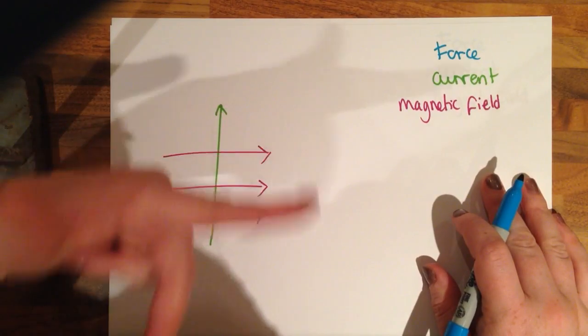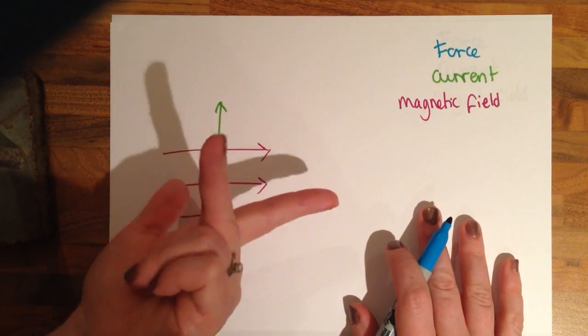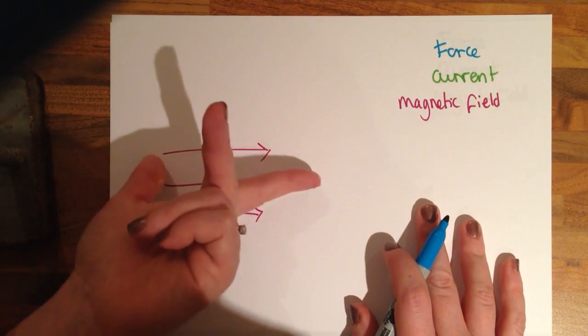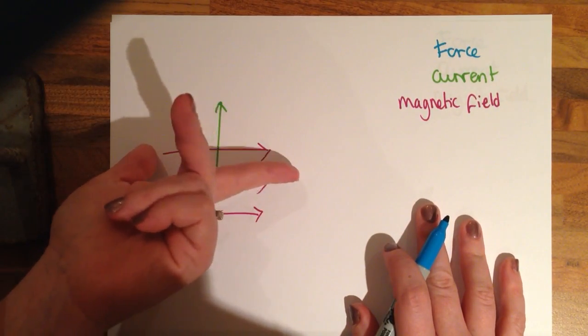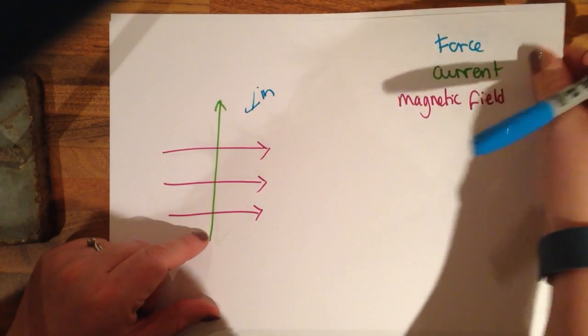Here I have my magnetic field going like that, I need to turn my hand around again because my current is going away and I can see that my force is going into the paper.